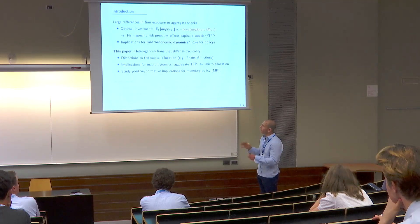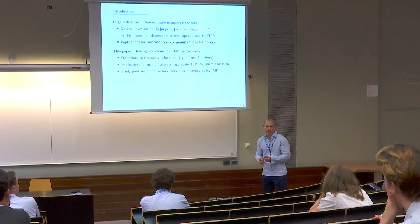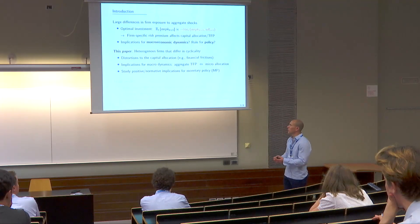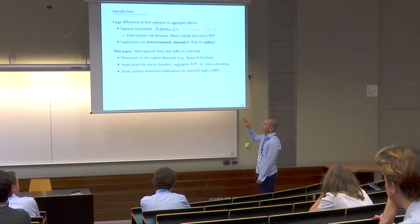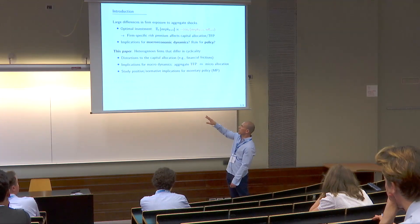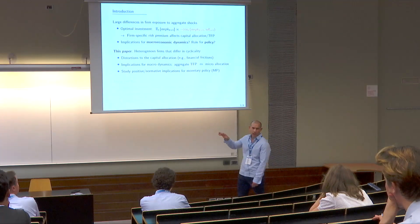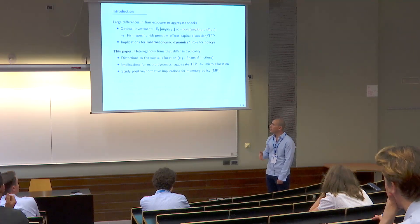In terms of implications for macrodynamics, the model uncovers what we think is a novel two-way feedback loop between aggregate TFP on the one hand and the microallocation on the other, suggesting that these are both endogenous objects jointly determined in equilibrium. We then use the framework to study the positive and normative effects of monetary policy — what does monetary policy do in this environment, and what should it be doing?